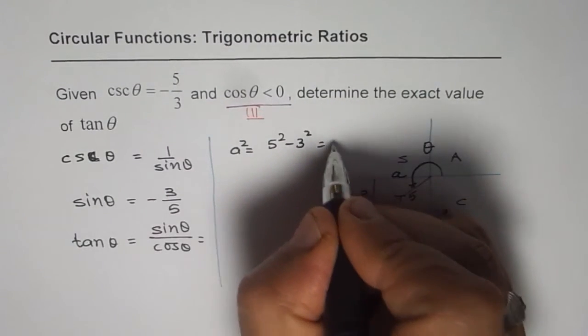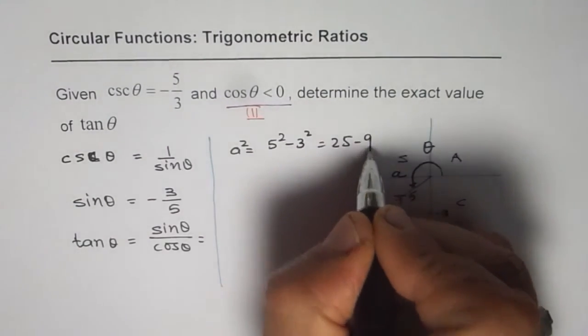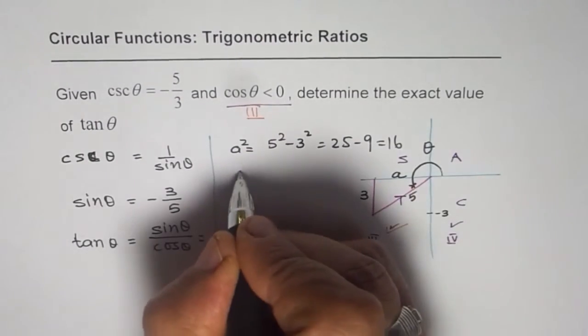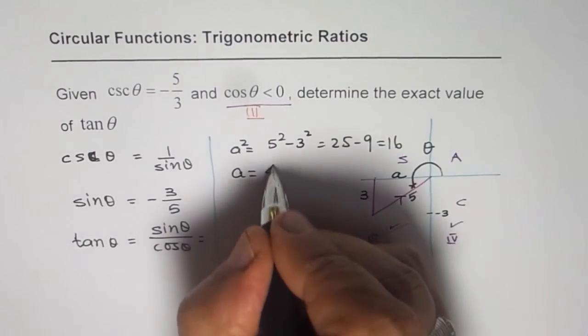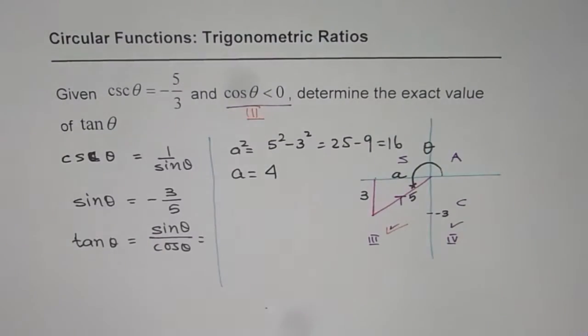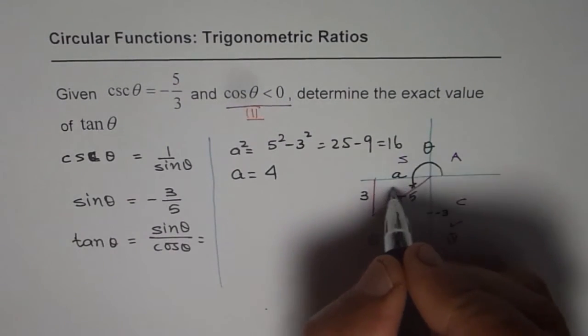Which is 25 minus 9, which is 16. So A should always be positive, square root of 16, which is 4. Since A is 4 for us, correct?